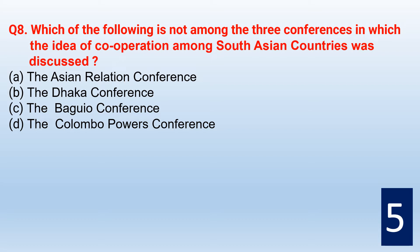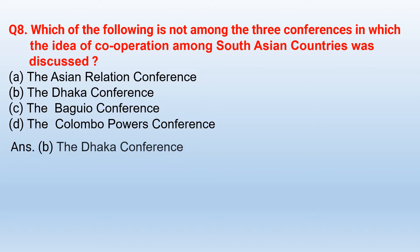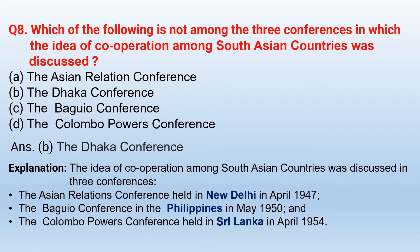Which of the following is not among the three conferences in which the idea of cooperation among South Asian countries was discussed? The correct option is option B — the Dhaka conference. The idea of cooperation among South Asian countries was discussed in three conferences: the Asian Relations Conference held in New Delhi in April 1947, the Baguio Conference in the Philippines in May 1950, and the Colombo Powers Conference held in Sri Lanka in April 1954.